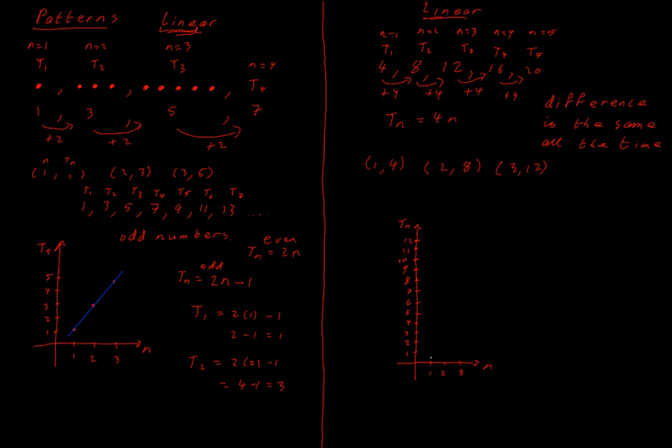So start at the origin. 1, 4. 2, 8. And 3, 12. Obviously, you can do this very neatly in your copy books because you have ruled paper. And if I draw a line through that, I get that my points all sit in a straight line. So it's a line. So it's a linear pattern.